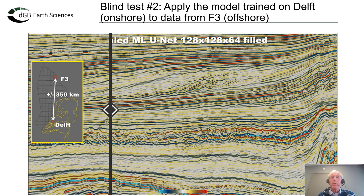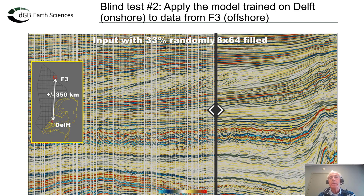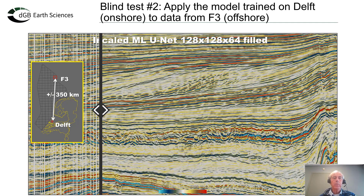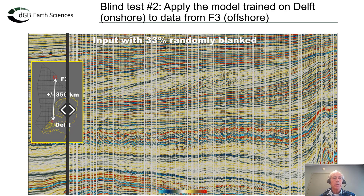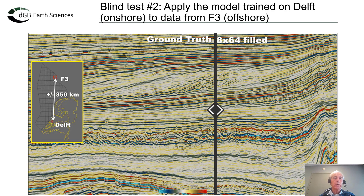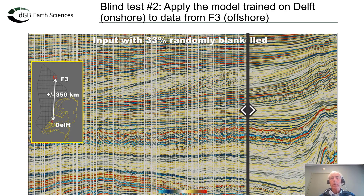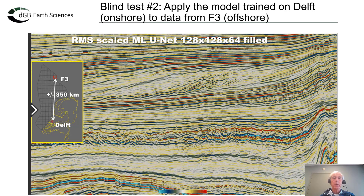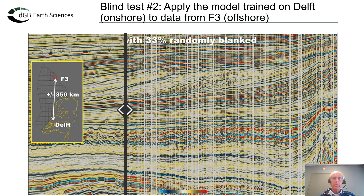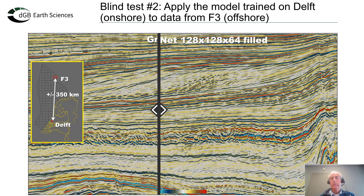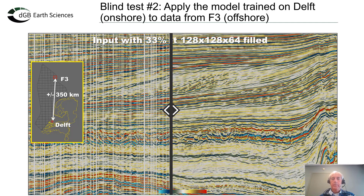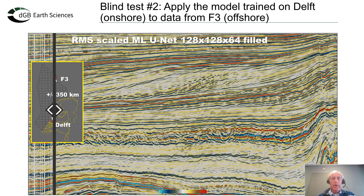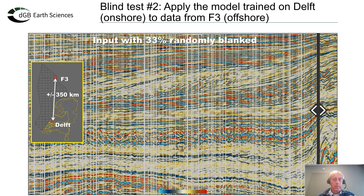We take it one step further and apply the same trained model to a completely different dataset. The model was trained on an onshore dataset in Delft and now we apply it to a dataset 350 kilometers away. We artificially blank 33% of the traces and apply the trained Delft model. You can see in the slider the ground truth versus the interpolation and the blanked traces — we are doing a near-perfect job. The only caveat is that we apply an automatic scaling on the traces to get it correct everywhere.